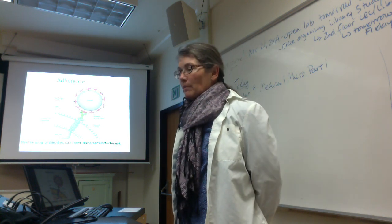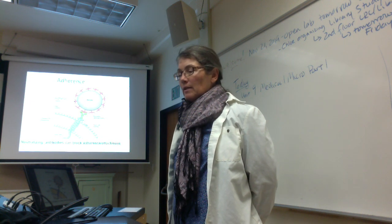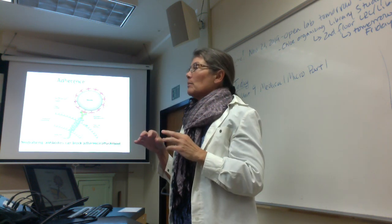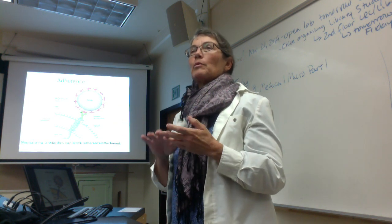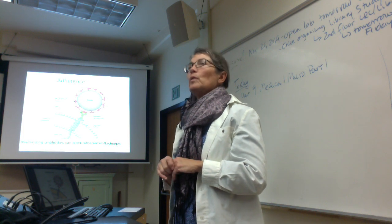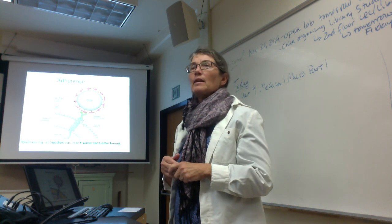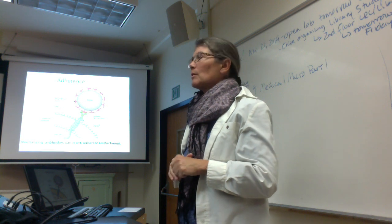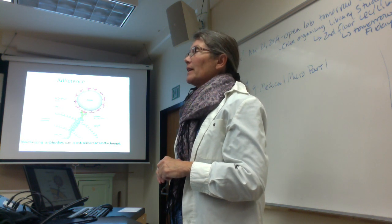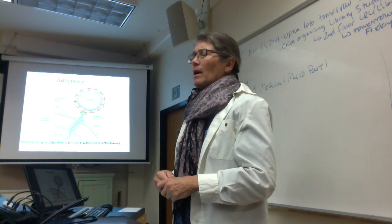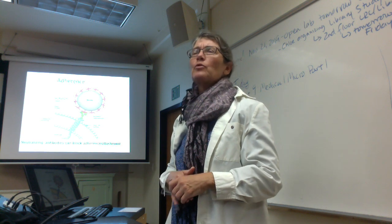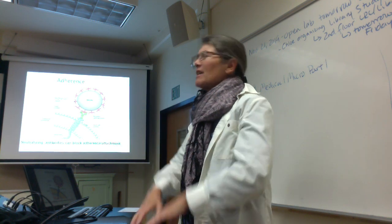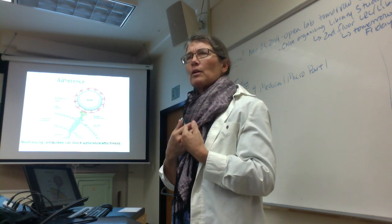As ID50 and LD50 decreases, virulence is increasing. This makes sense: if we have a microbe that has all kinds of virulence factors that permit it to invade, avoid, and outwit our immune system, and it only takes a few of them — each microbe is so well armed — it makes sense those are going to be highly virulent. In contrast, if you have a microbe with very poor weapons, you need massive numbers to overwhelm the host's immune system, meaning each individual microbe is not very virulent.